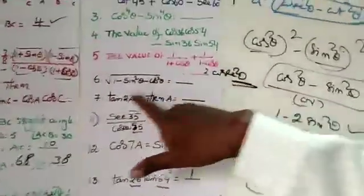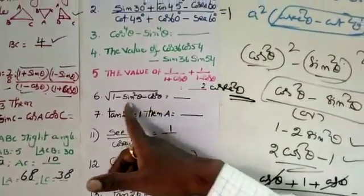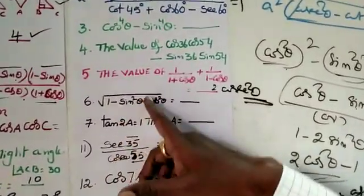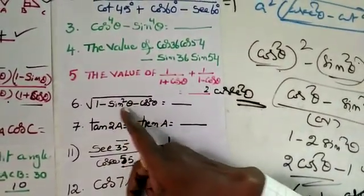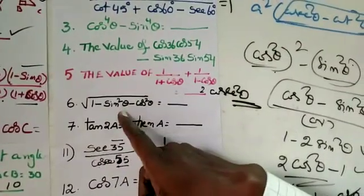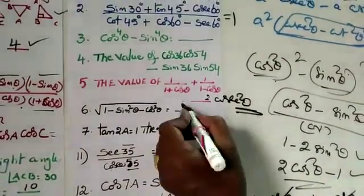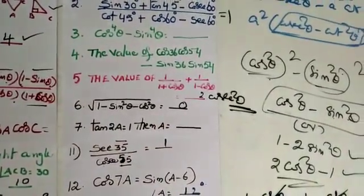This is very important. Here the minus terms cancel and plus terms remain. Using sin squared theta plus cos squared theta equals 1, and 1 minus 1 gives 0.